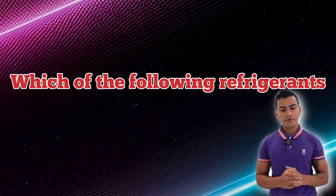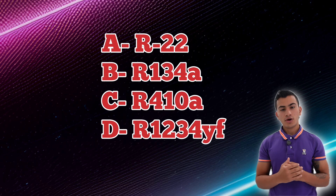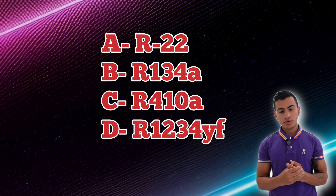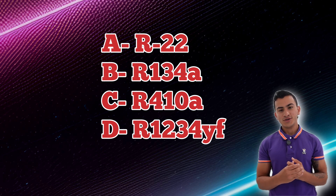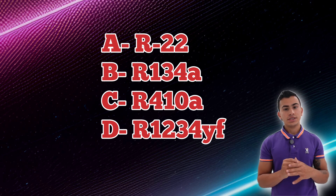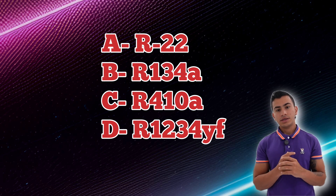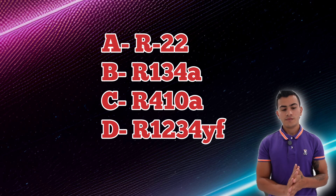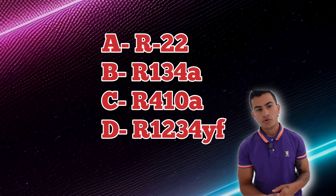Which of the following refrigerants contains chlorine? The options are R22, R134A, R410A, and R1234YF. R1234YF is completely off — it does not contain chlorine and is an HFO. The answer is R22, which contains a lot of chlorine.